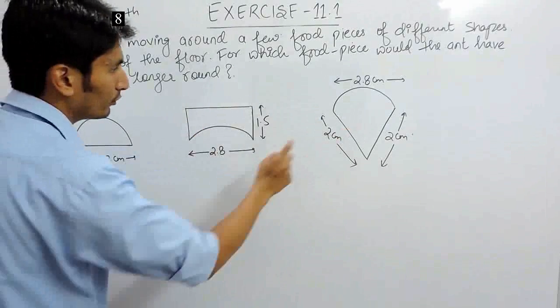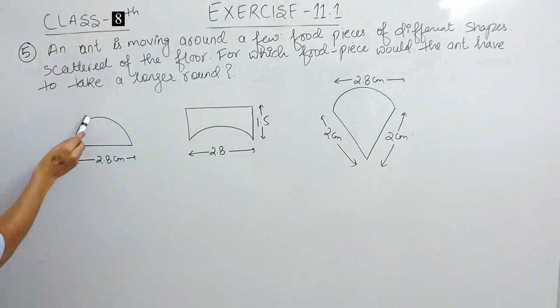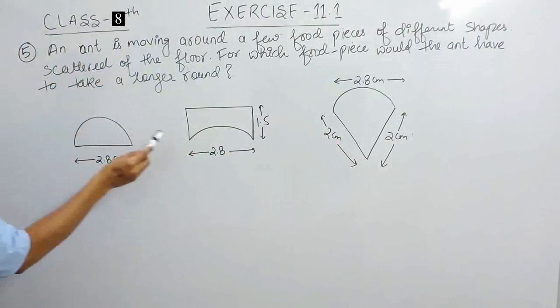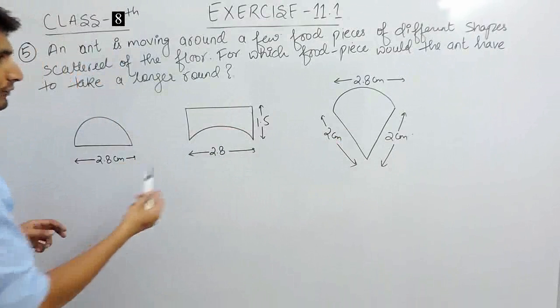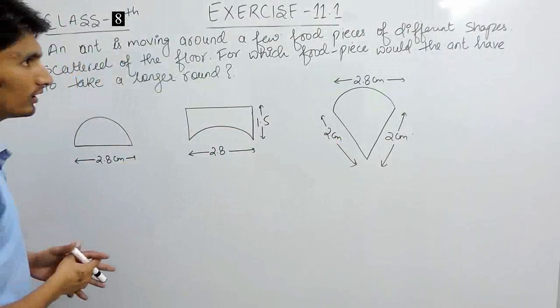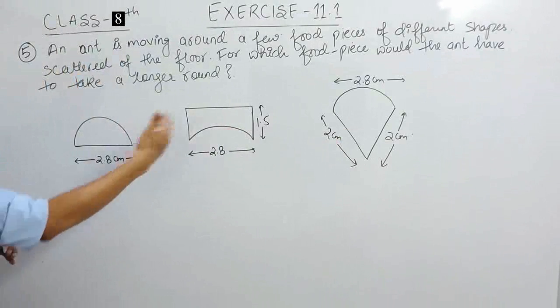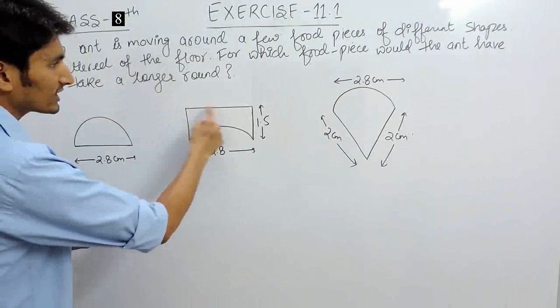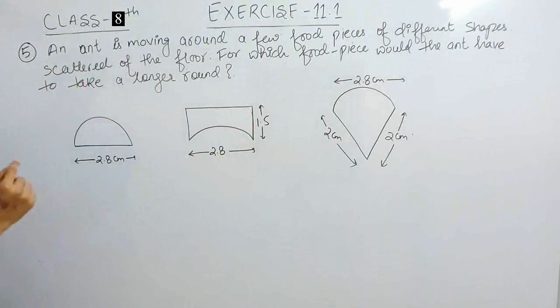These are three pieces of food. You have to find if an ant has to move around these food pieces, which food piece will take more time, or you can say which food piece has more distance to cover.